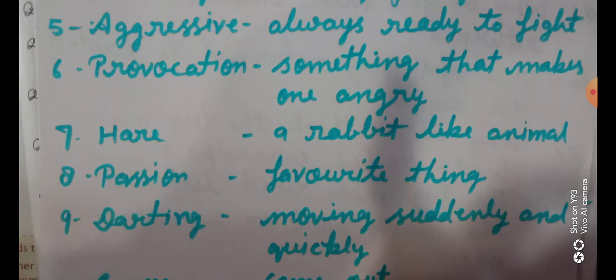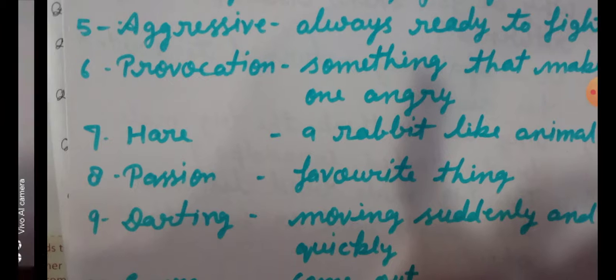Aggressive: always ready to fight — aggressive is a hyper nature, prepared to fight. Provocation: something that makes one angry — kuch aisa karna ki doosre ko gussa aa jaye. Hare: a rabbit-like animal. Passion: favorite thing — kisi cheez ko karne ki ek junoon hona. Darting: moving suddenly and quickly — achanak se ghoom jana, tezi se.